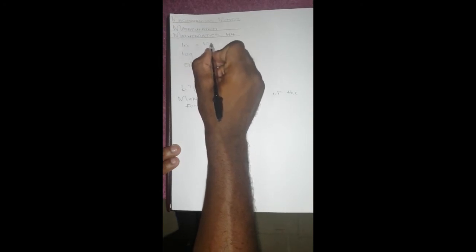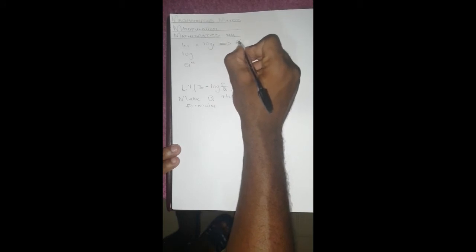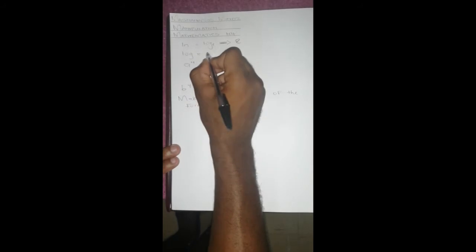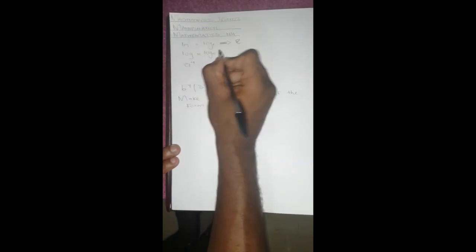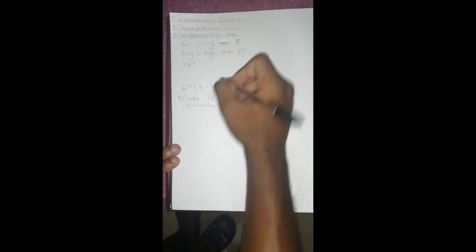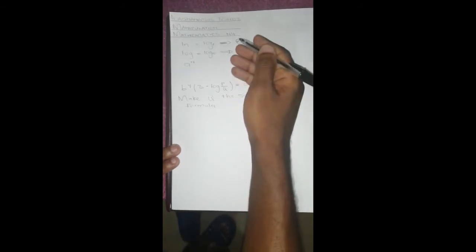To cancel it out you use 10. So with ln, you're going to use a ln and it cancels ln. Then on the other side of the equation it's going to be e to the power whatever which was on that side.